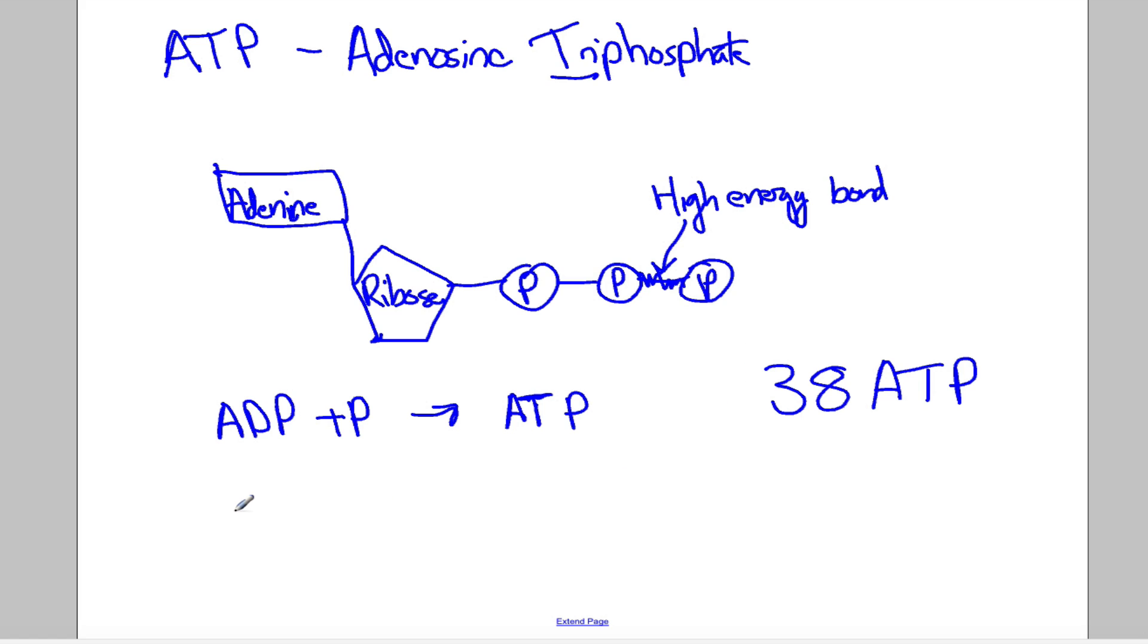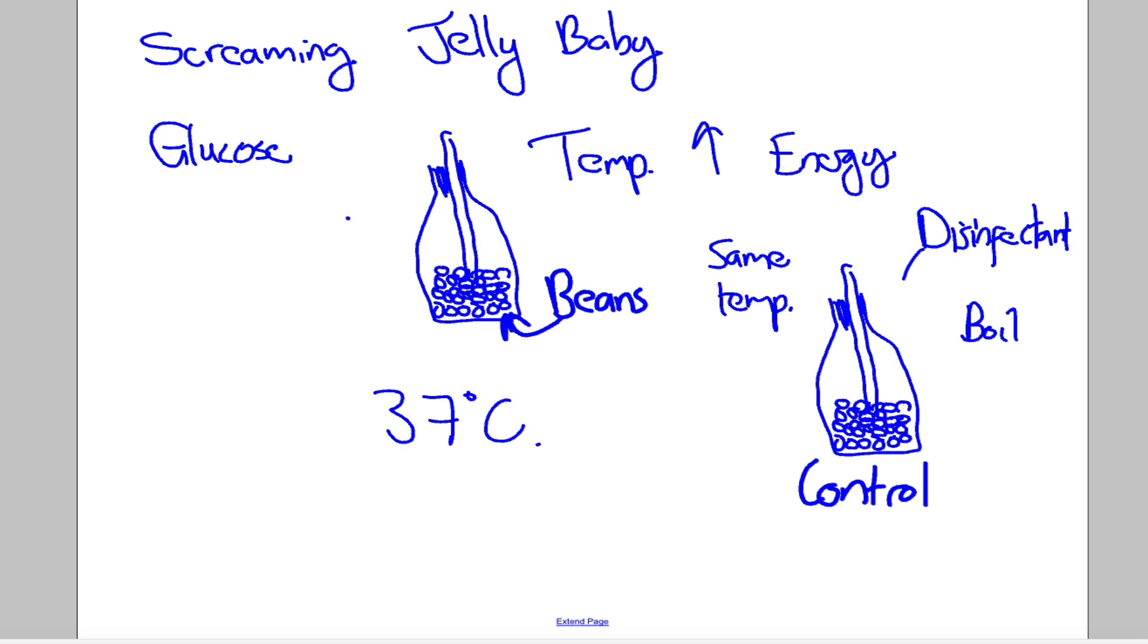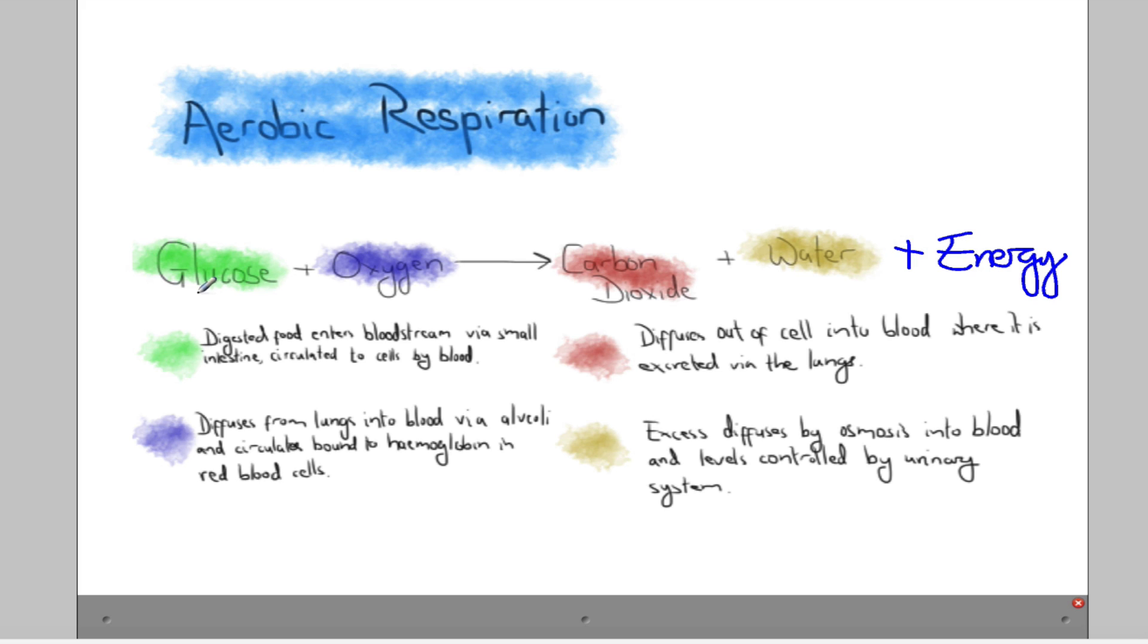Now if there's no oxygen available, if you're exercising at a rate that is causing your cells to respire faster, to use up that oxygen faster than your body can supply it, then this is going to slow down and eventually stop. So aerobic respiration, if we take oxygen out of the equation, if that's gone, then this all stops.